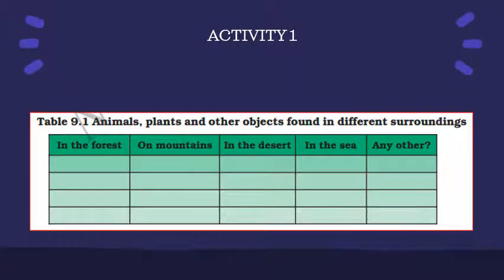They tried to think of places on Earth where there may not be any living creatures. Bojo thought of places near his home — he tried the cupboards — but he found one tiny spider in the cupboard. Outside the home too, there did not seem to be any place without living creatures of some kind or the other.